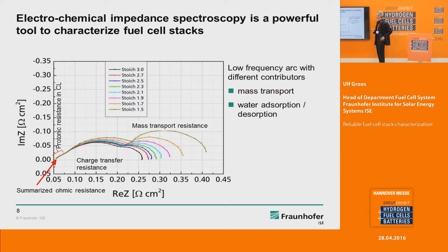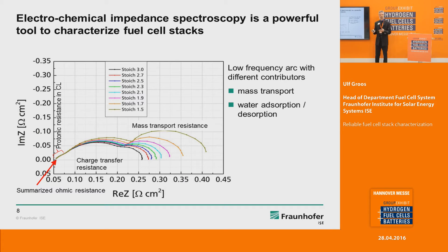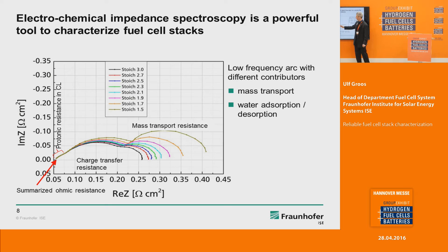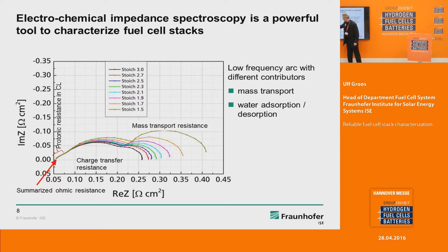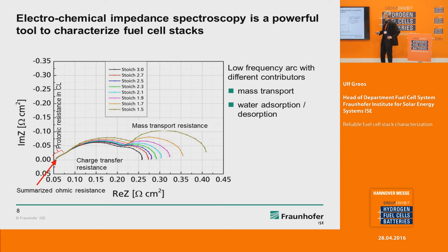We like to use electrochemical impedance spectroscopy within our stack characterization. With impedance spectroscopy you can differentiate between the different processes occurring within the stack. Depending on the frequency applied, you see something about the mass transport resistance — the gas supply to the electrodes — and the charge transfer resistance, how electrons and protons flow. You have a region where you can learn about the proton resistance in the membrane itself. Ultimately you get insight into mass transport, gas supply, and humidification.